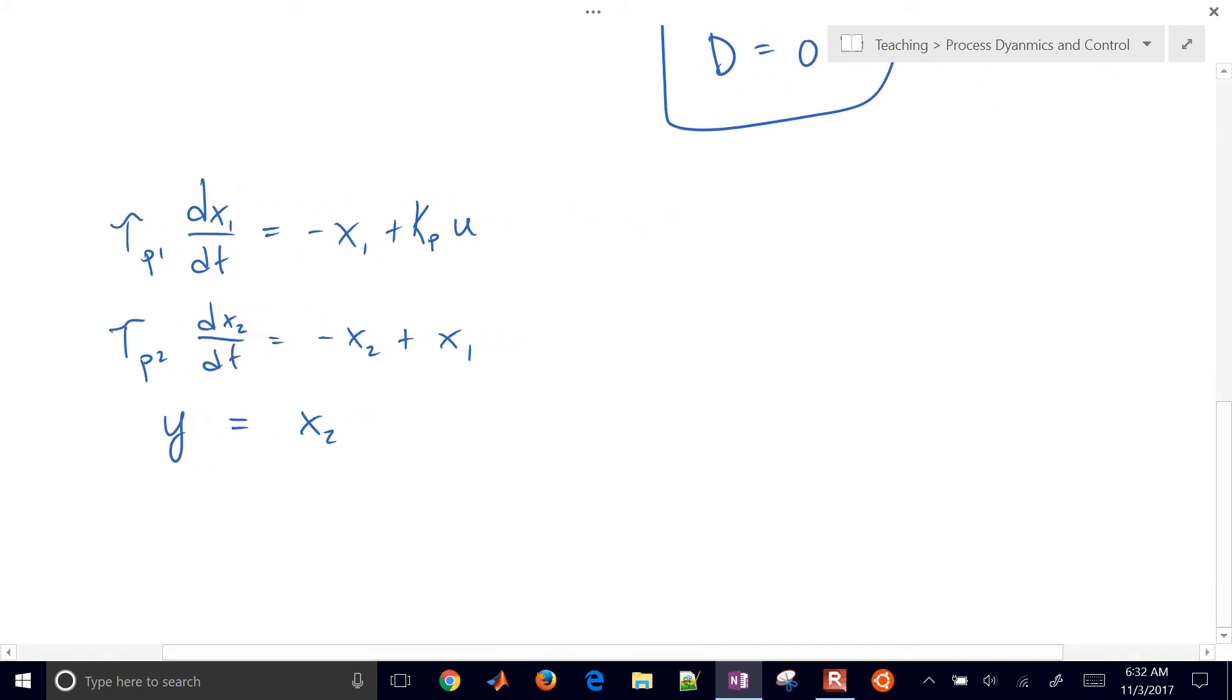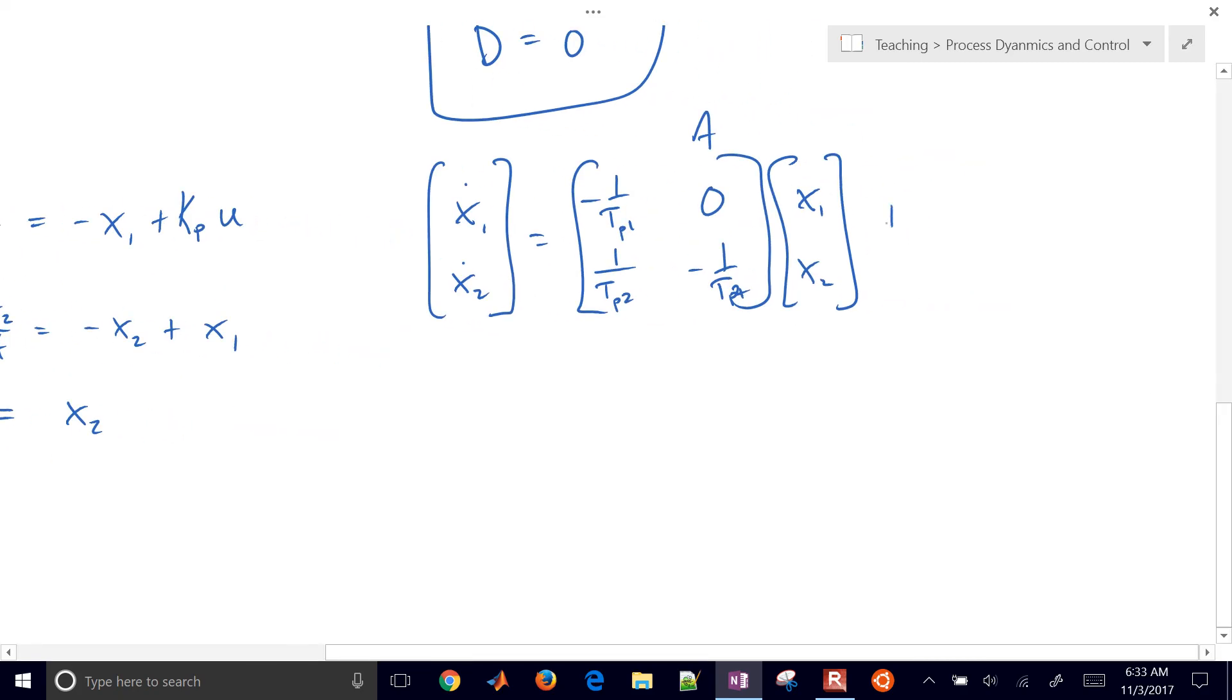So if I divide through by tau P1 and tau P2 and then just rearrange this, I'm going to put this into the state space form where I'd have X1 dot and X2 dot. Those are the derivatives with respect to time. And then here is my A matrix, and that's going to be minus one over tau P1. And then I'll have a zero here because I don't have X2 in my first equation, and I'll write this in matrix form. And then I'll also have one over tau P2 and minus one over tau P2 there. So we have, there's our A matrix. And then our B matrix is going to be Kp over tau P1, and then there's zero there because we don't have U in our second equation.